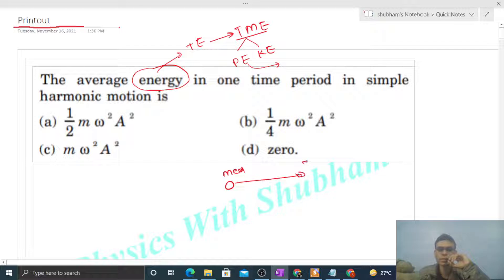So what will be the value of potential energy at any distance x for the particle? Let's say this particle's position is here at a distance x.